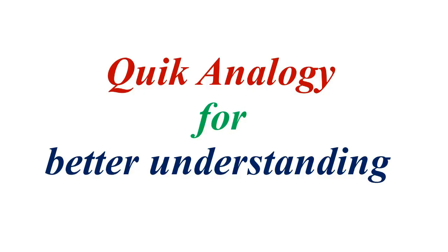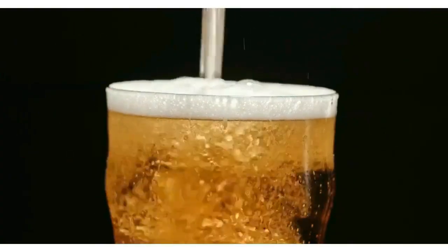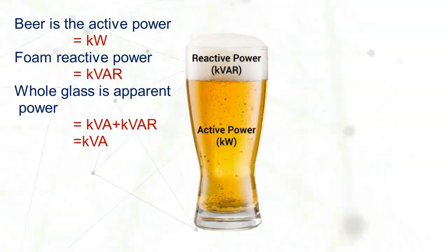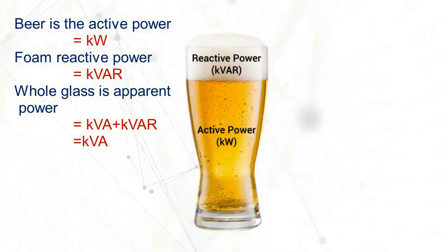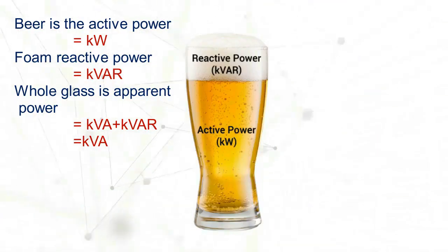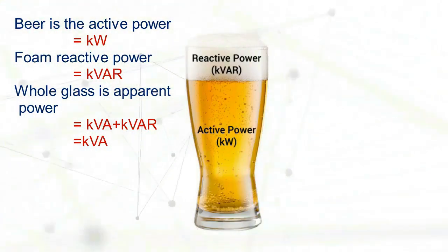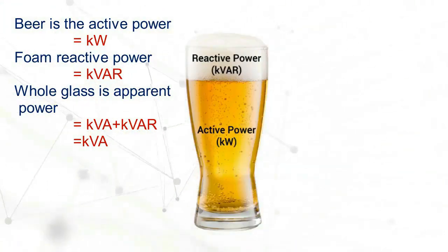Let me give you an analogy. Imagine you are pouring a glass of beer. The beer is the useful part — that is the kilowatt. The foam is not drinkable — that is the KVAR. But the total volume in the glass, that is the KVA. The brewery — or in our case the generator — has to deliver the whole glass, not just the beer.